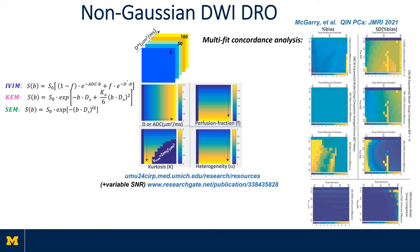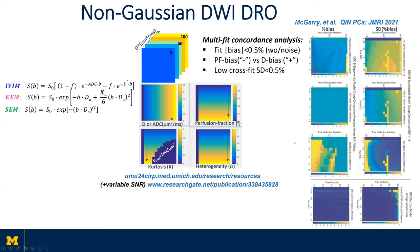These noiseless DROs were used in a recent QIN project to establish multi-fit concordance across sites processing the MCW dataset. Even in the absence of noise, finite fit bias — less than half a percent — was detected in the range of IVIM fraction greater than 50%, and was negative for the IVIM fraction itself versus positive for the diffusion coefficient. The overall fit algorithm concordance across sites showed small standard deviation overall, but these errors would be amplified in the presence of noise.